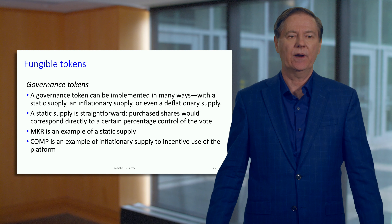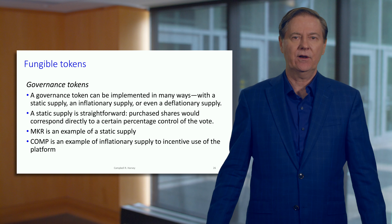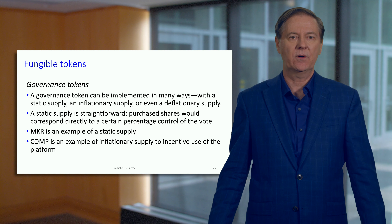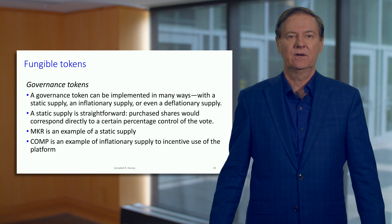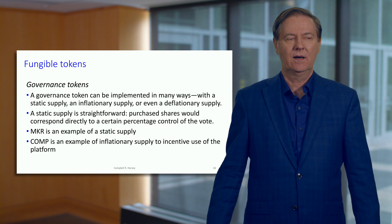There are many different ways to implement a governance token. It might have a fixed supply, and when that supply runs out, that's it. It's also possible to have a governance token with some sort of inflationary rule, where the total number of tokens can increase. Maker — the governance token for DAI — has a static supply. COMP — the governance token for Compound — has an inflationary supply, and they use it as an incentive.